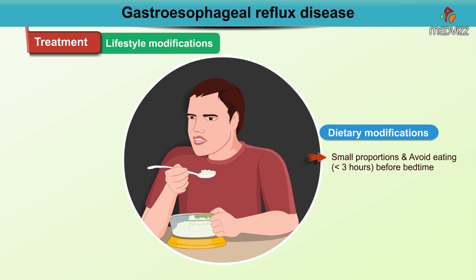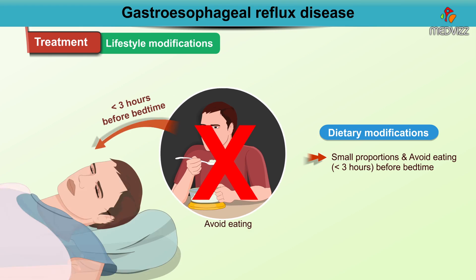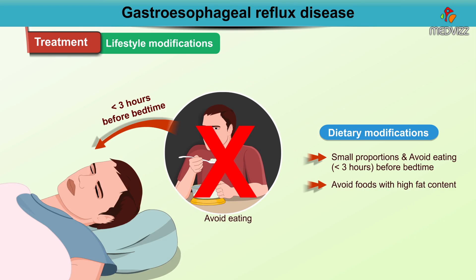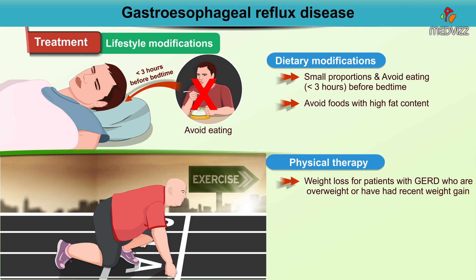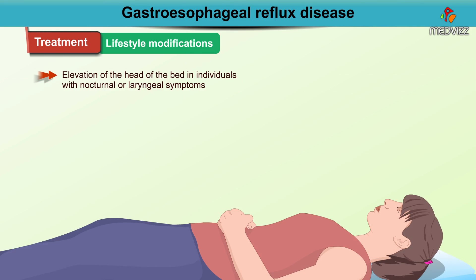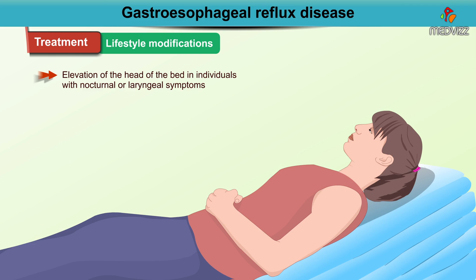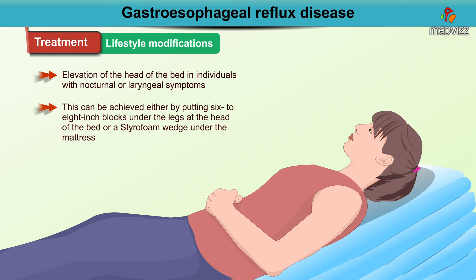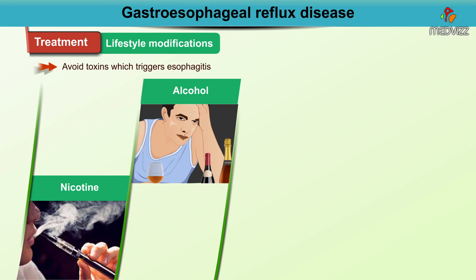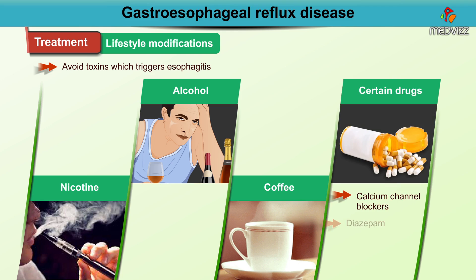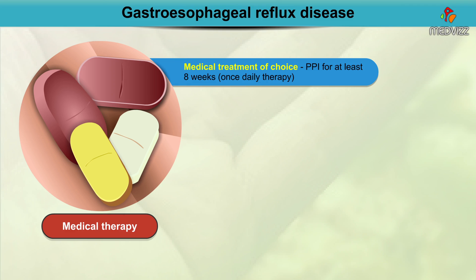Lifestyle modifications including dietary changes and physical activity can help reduce GERD symptoms. Eating small portions, avoiding food less than three hours before bedtime, and avoiding high-fat foods are recommended. Weight loss for overweight patients and elevation of the head of the bed by six to eight inches using blocks or a foam wedge under the mattress can help, particularly for nocturnal or laryngeal symptoms. Avoiding triggers like nicotine, alcohol, coffee, calcium channel blockers, diazepam, and bisphosphonates is also advised.